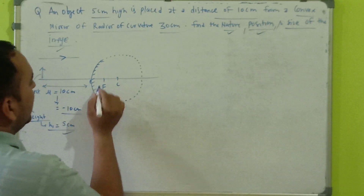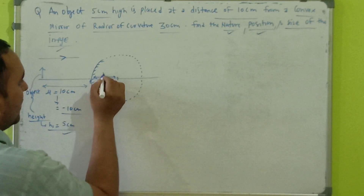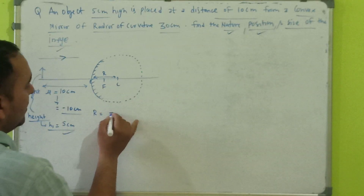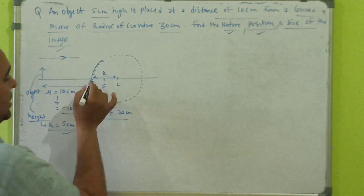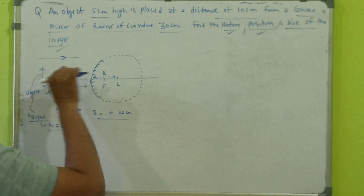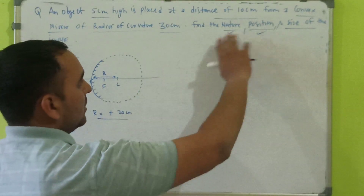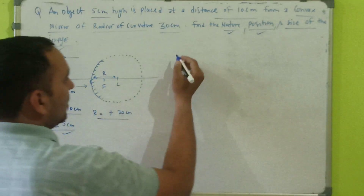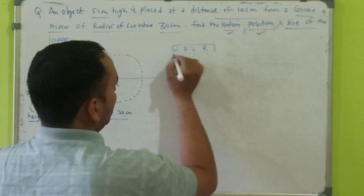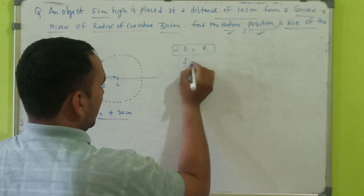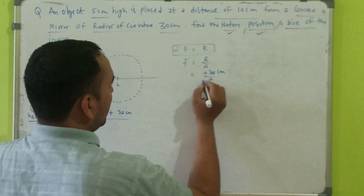The radius of curvature is the distance between the center of curvature and the pole. R is given as plus 30 centimeters. There is no negative sign because we are measuring the distance from the pole towards the center of curvature, which is in the same direction as the incident ray. Now, we know that R equals 2f, so f equals R divided by 2, which gives focal length as plus 15 centimeters.